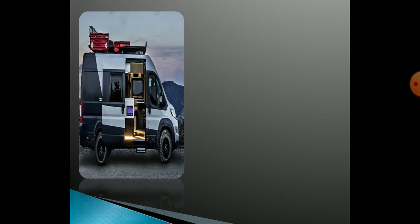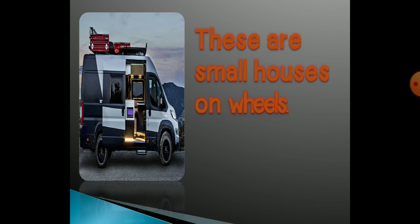This is a picture of a caravan. These are small houses on wheels. Ye ek chhota sa house hai wheels mein — koi bhi van ya bus ho, usmein ye houses aapko dekhne milte hain. Us poori van aur bus ke andar chhota sa ghar banaya hota hai. You all understood? Jazakallah. Assalamu alaikum wa rahmatullahi wa barakatuh.